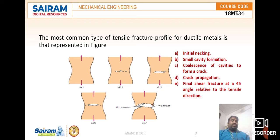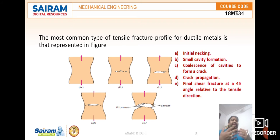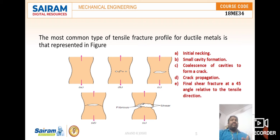The first stage shows initial necking. The material behaves elastically up to the limiting stress, and beyond that stress plastic deformation occurs. As stress increases, the cross-sectional area of the material decreases, and a neck region is produced.